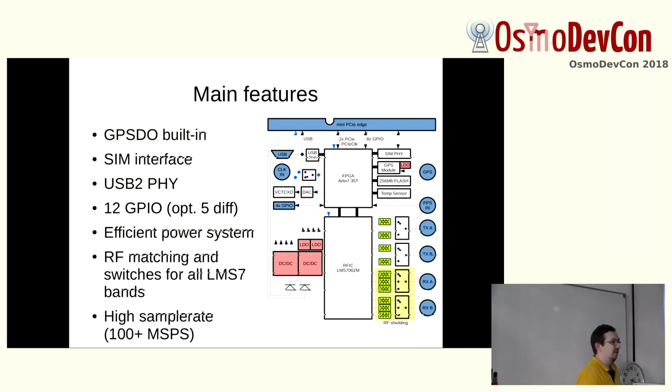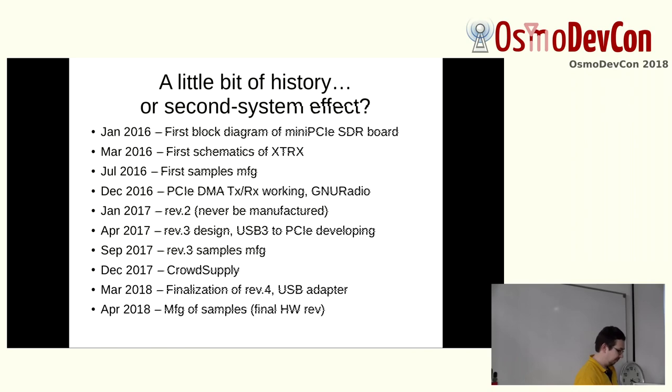Xtrex has 12 GPIOs where five of them have differential pairs, so it's LVDS. You can do really high speed data on these GPIOs. Xtrex uses very efficient power system. I'll talk about it later. We use all bands available from LMS7 chip, and the main feature was to support the most possible sample rate we can do, above 100 MSPS.